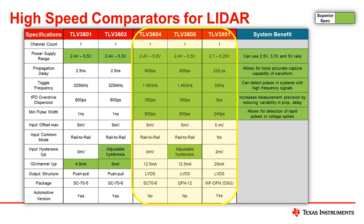Consulting the table, the TLV3604 and TLV3605 stand out as solid options for these end equipment with an 800-picosecond response time. They also feature a high 1.5 GHz toggle frequency, which is critical for signal integrity at high frequencies. The TLV3605 has the added benefit of adjustable hysteresis and latch, which can be especially useful for catching input signals in the trigger function application. Should even better accuracy be needed, the TLV3801 is another great option, clocking in at an impressive 225 picoseconds. This part additionally includes split supply capability for monitoring signals at and around 0 volts, and a very rapid 3 GHz toggle frequency.